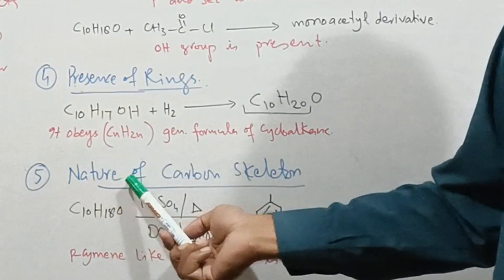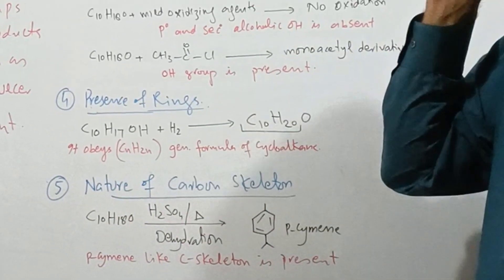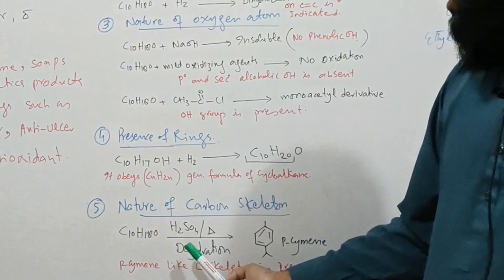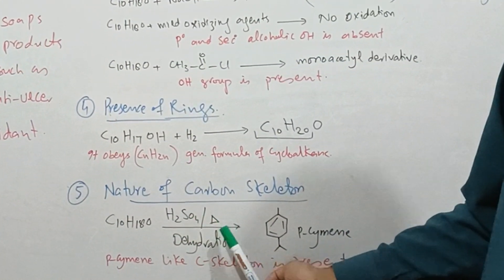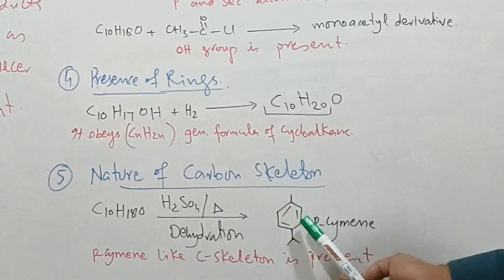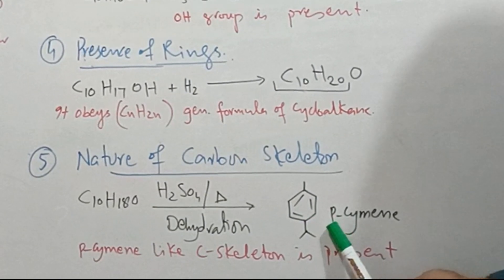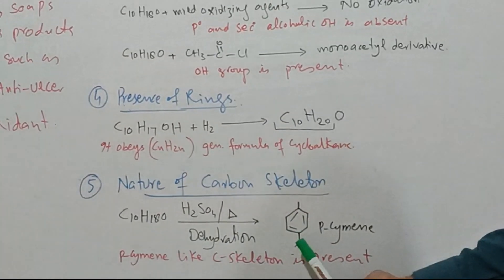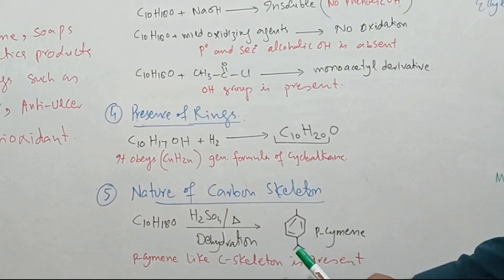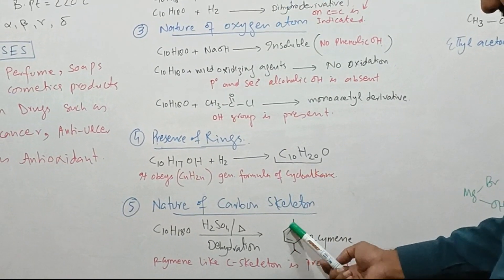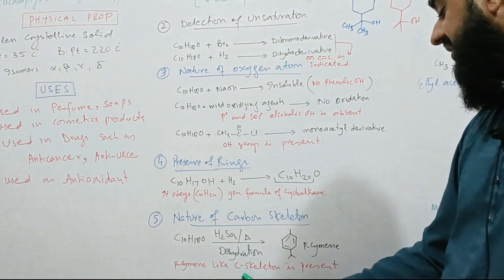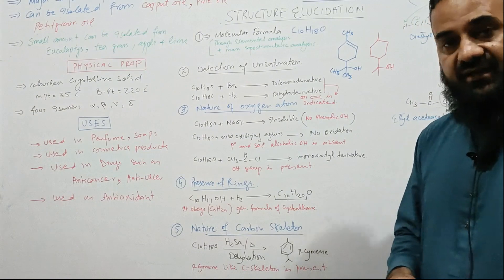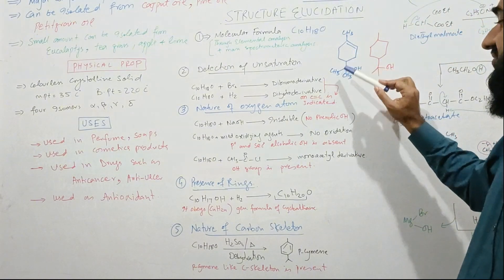For the arrangement of carbon atoms and carbon skeleton: when this compound is treated with sulfuric acid followed by heat, dehydration takes place and p-cymene is formed. This shows the carbon skeleton present in alpha-terpineol has p-cymene-like arrangement. All this elucidated data shows alpha-terpineol has this structure.